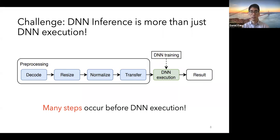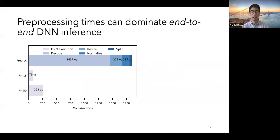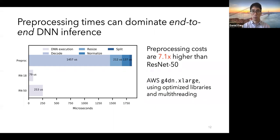Because of these dramatic improvements in systems, pre-processing costs can now dominate end-to-end DNN inference. For example, what I'm showing here is the breakdown of pre-processing between ResNet-18 and ResNet-50 in normalized latency units. As we can see, pre-processing costs are up to 7.1 times higher than ResNet-50, which has historically been considered an expensive deep neural network. And we're running this benchmark on the AWS g4dn.xlarge instance using optimized libraries for pre-processing and multi-threading on all the cores, and it contains a single NVIDIA T4 GPU.